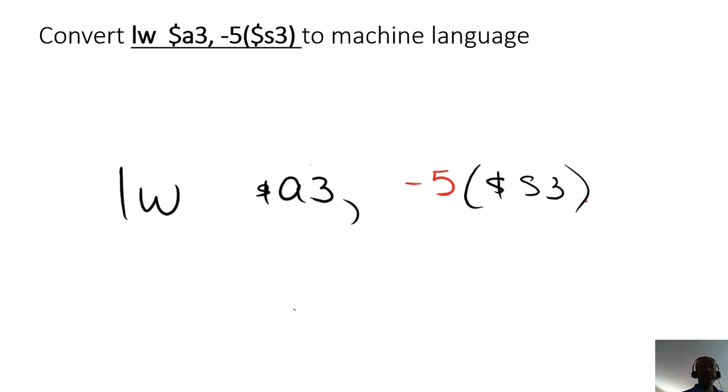The first thing you're going to do is recognize you have one, two, three, four different pieces of encodable information there. So if you were to go to the green sheet, the first thing you need to do is start with the load word instruction and try to figure out what its opcode is.